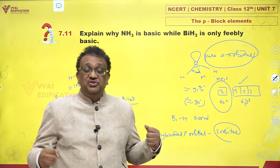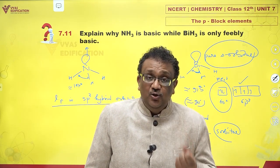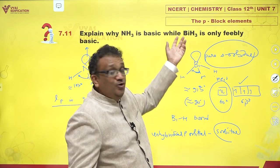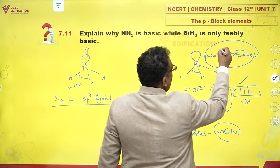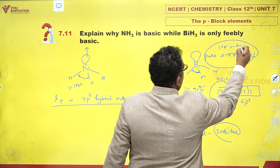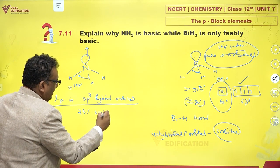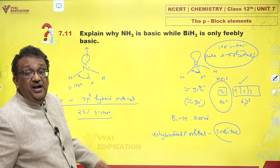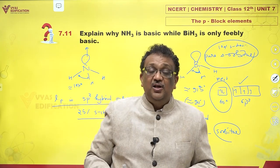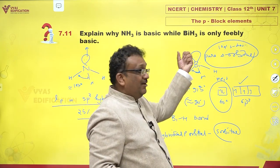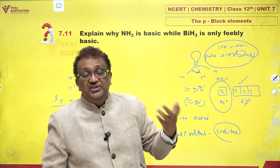Remember: S is for strength. If a lone pair lies in an s orbital, it is strongly attracted by the nucleus and it is difficult to donate. The pure s orbital has 100% s character, while sp3 has only 25% s character. Greater the percentage of s character, more strongly is the electron attracted by the nucleus, making it difficult to donate — and so the basic strength decreases.